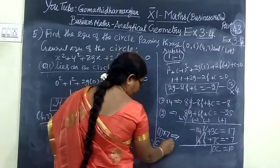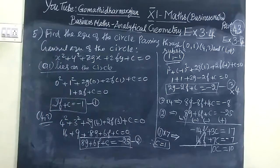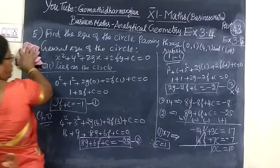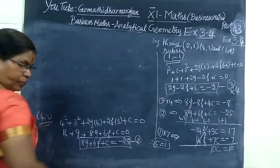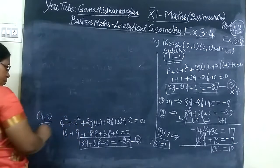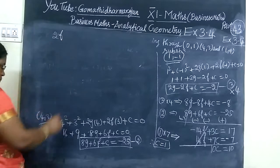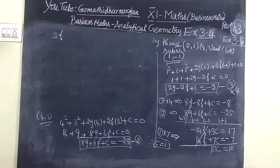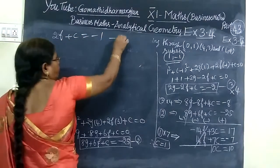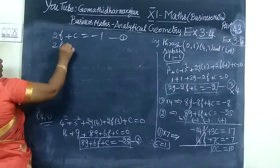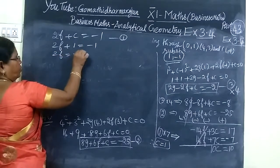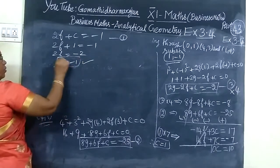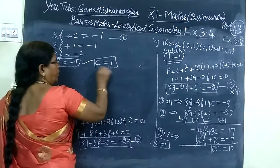When you add these equations, the terms cancel and you get 10c equal to 10. Therefore, c equal to 1. This answer is correct. Now substitute c equal to 1 into the first equation: 2f plus c equal to minus 1, so 2f plus 1 equal to minus 1, therefore f equal to minus 1.